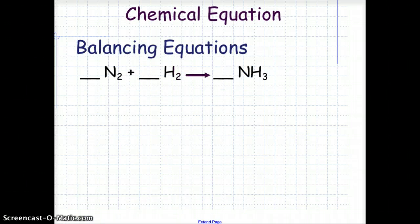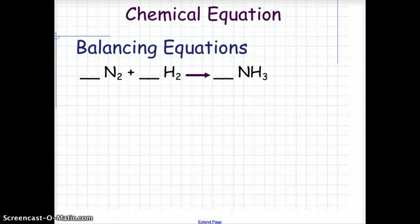Let's try balancing an equation. Here we have a molecule of nitrogen combining with a molecule of hydrogen to make a molecule of ammonia, NH₃. We note that nitrogen and hydrogen are both diatomic atoms, meaning that in their standard gaseous state they will be N₂ and H₂, having 2 atoms — diatomic, meaning 2 atoms per molecule.